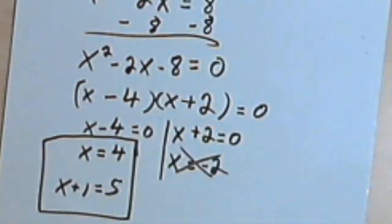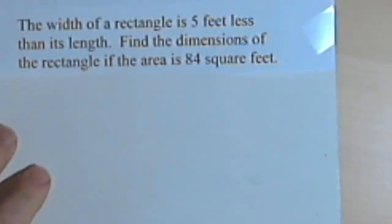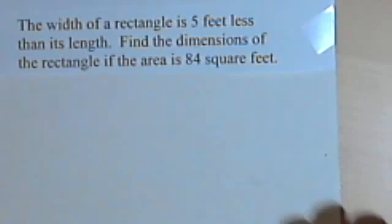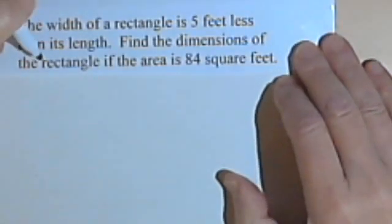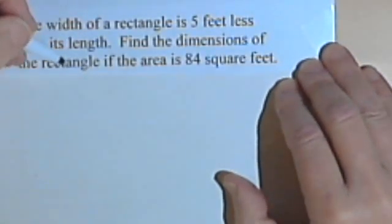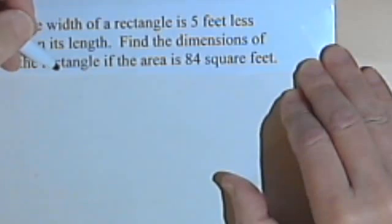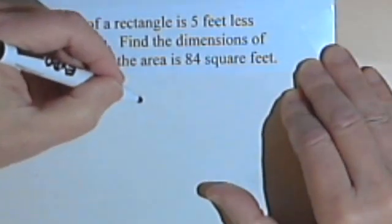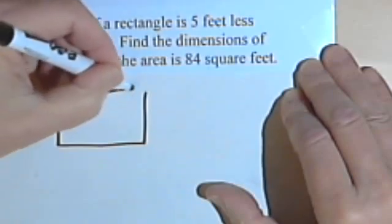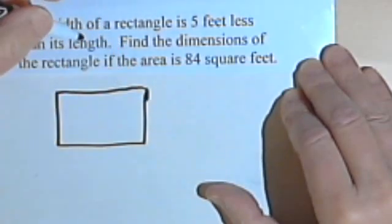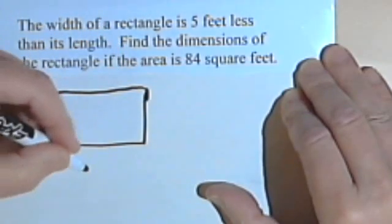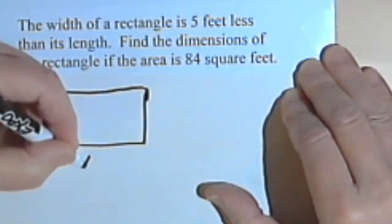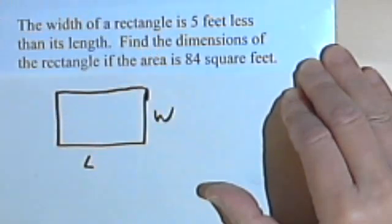Let's look at another one. The width of a rectangle is 5 feet less than its length. Find the dimensions of the rectangle if the area is 84 square feet. Let's draw a little picture. The width is 5 feet less than the length. So let's call this side the length. We'll call this the width.